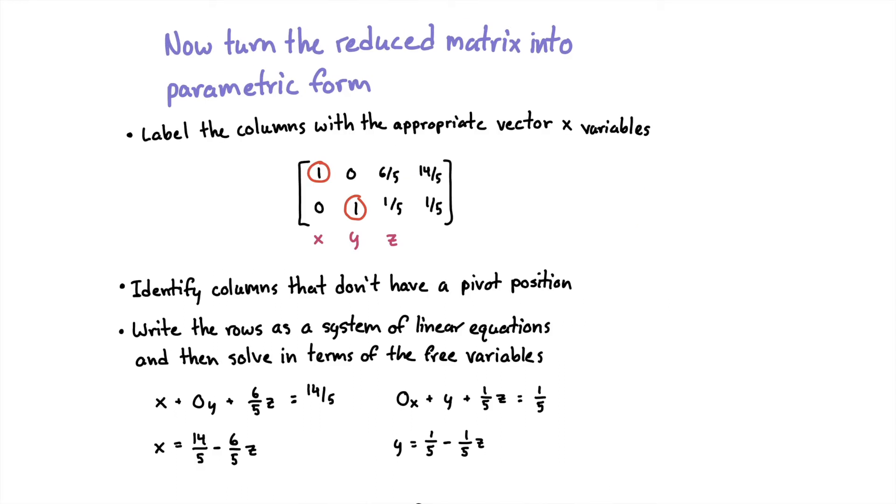The first step in parametric form is that we're going to label each column with the appropriate vector from X. If we remember from the start of the question, we said X equals X, Y, and Z. We just named three variables. As we can see here, these columns are X, Y, and Z. After labeling our columns, we want to identify the columns that don't have a pivot position. If you look at this Z column, we've identified the ones in the first two columns, but the Z column does not have a leading coefficient, and so we call that variable a free variable.